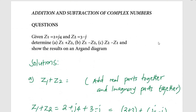Now let us look at the addition and subtraction of complex numbers. Using the guiding question: given z1 equal to 2 + j4 and z2 equal to 3 minus j, determine (a) z1 plus z2, (b) z1 minus z2, and (c) z2 minus z1, and show these results on the Argand diagram.